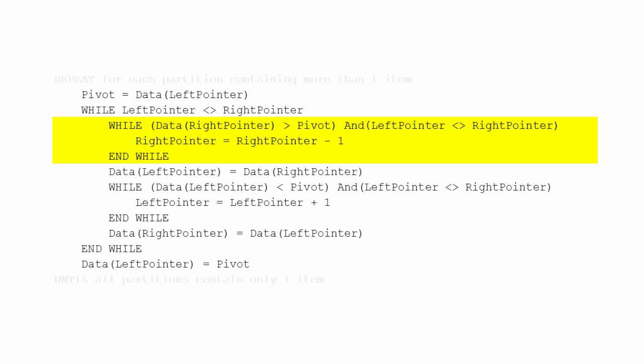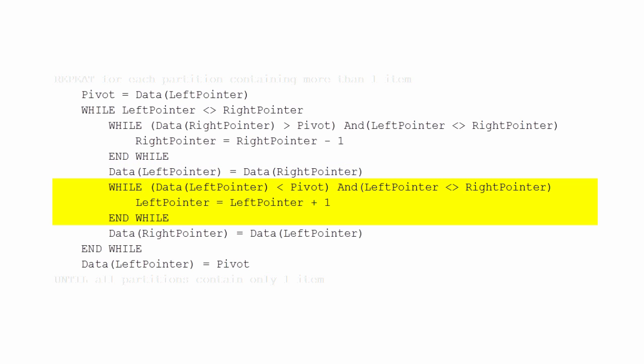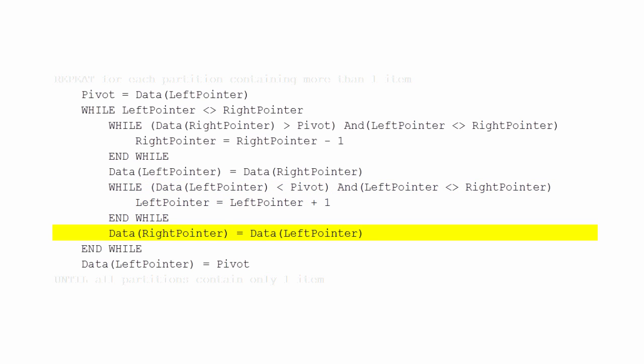All that's happening inside this loop is advancing the right pointer. When the data at the right pointer is smaller than the pivot value, we stop advancing it and copy the data from it to the left pointer position, and then the left pointer begins to advance. In the same way, if the data at the left pointer is less than the pivot, we just keep advancing the left pointer; otherwise, we take the data at the left pointer and put it in the position given by the right pointer.